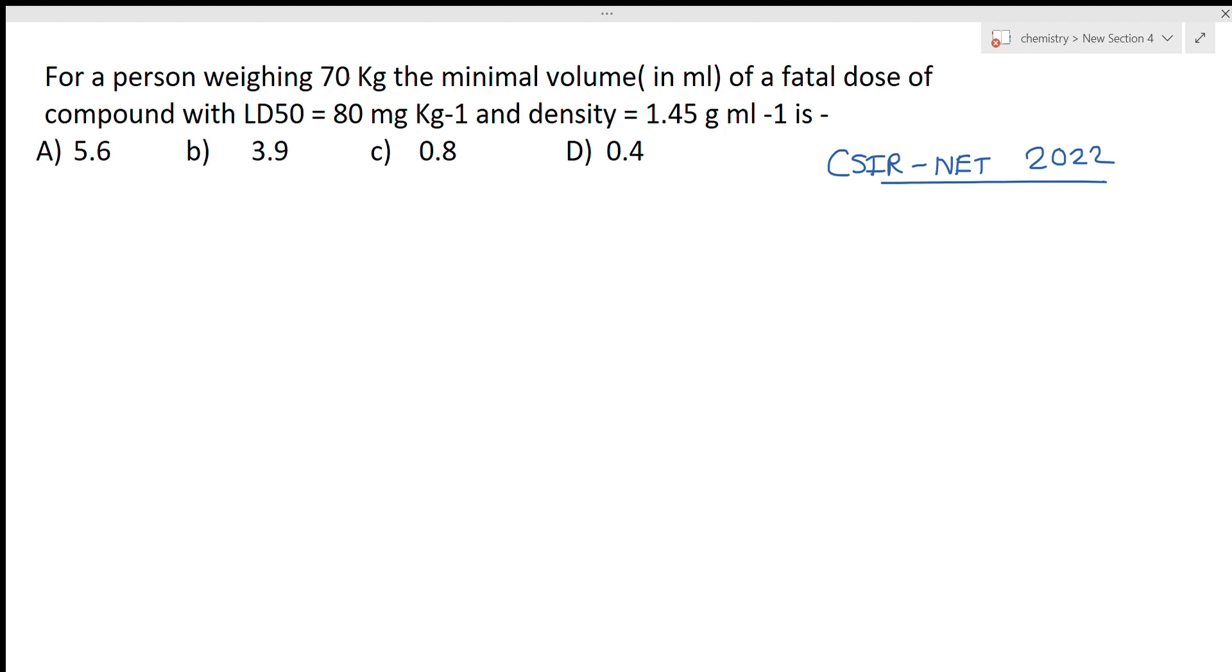The question is: For a person weighing 70 kilograms, the minimum volume in ml of a fatal dose of compound with LD50 equal to 80 milligrams per kg and density we have given 1.45 grams per ml. It means we have to find out the minimum volume of the fatal dose.